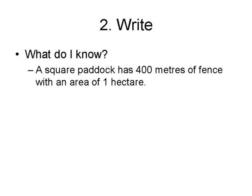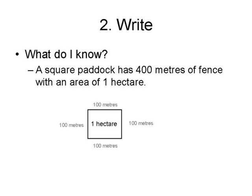The second thing is we're going to write down what we know. From what we've read, we know that he started with a square paddock and it has 400 metres of fence, and the area that represents is one hectare. So let's draw a square, put a fence around it, and call it one hectare. I know a fence goes around the perimeter, so with a square each side is exactly the same — each side will be 100, because 100 plus 100 plus 100 plus 100 equals 400 metres.